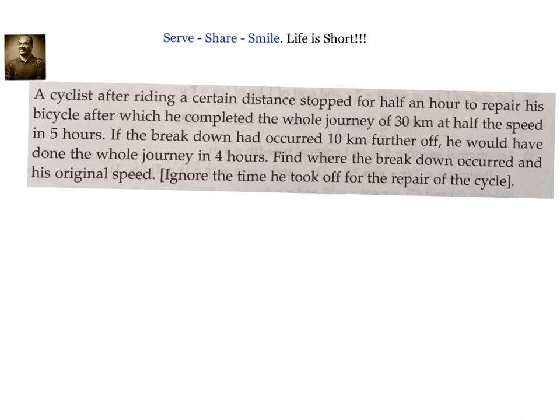Let us look at this problem related to 10th grade linear equations in two variables. A cyclist after riding a certain distance stopped for half an hour to repair his bicycle, after which he completed the whole journey of 30 kilometers at half the speed in 5 hours. If the breakdown had occurred 10 kilometers further off, he would have done the whole journey in 4 hours. Find where the breakdown occurred and his original speed. Ignore the time he took off for the repair of the cycle.